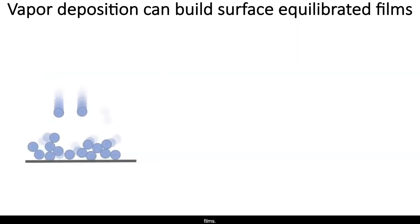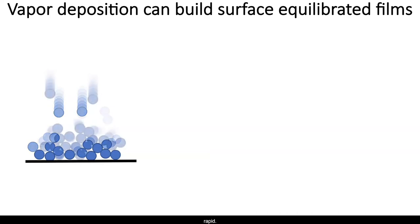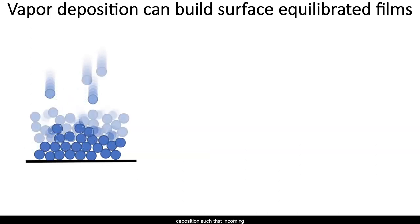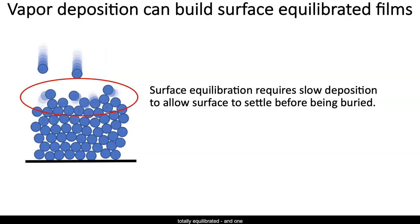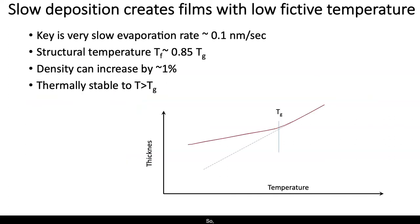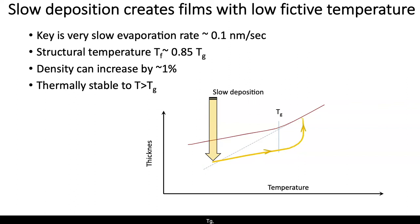One can use that rapid surface equilibration to build films. Every atom of a vapor-deposited film starts out at the surface, where relaxation is rapid. For sufficiently slow deposition, such that incoming particles settle in before being buried, one will end up with a film structure that has been totally equilibrated, and one needn't wait for 20 million years. So if one deposits sufficiently slowly, one can produce a vapor-deposited film which has a density and presumably a structure characteristic of the temperature at which it was deposited. We know this because that film can be heated to above Tg, where it turns into ordinary liquid, and then recooled to see what the thickness would be as an ordinary quenched film. We take its fictive temperature to be where the thickness crosses the extrapolated supercooled liquid line. One finds that Tf is near the deposition temperature down to about 15% below Tg.